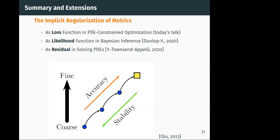Manny adds that the near-orthogonality phenomenon also occurs in high dimensions with random sampling, which one can observe in classical gradient descent. Dr. Yang thanks him.